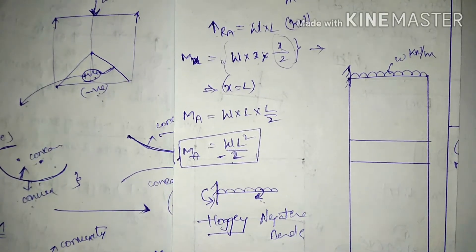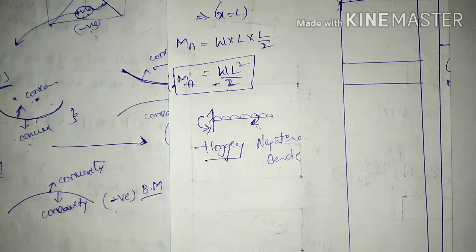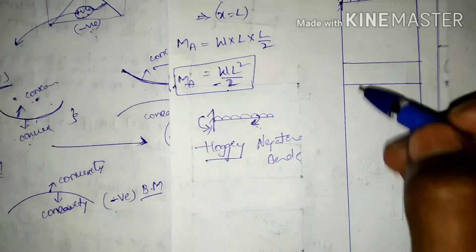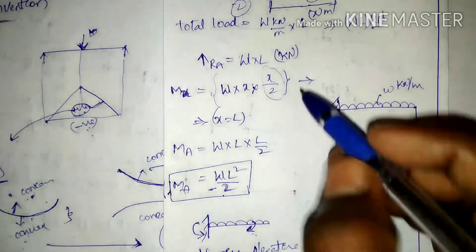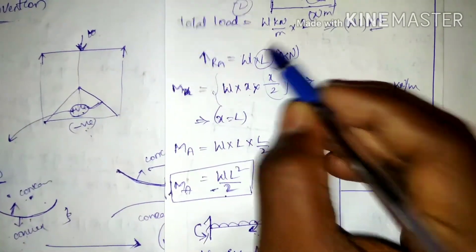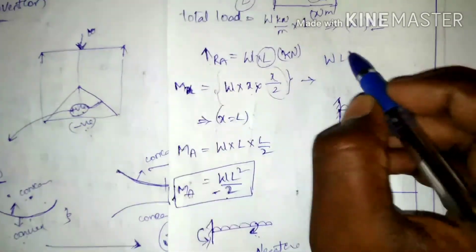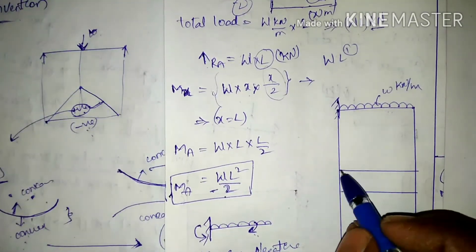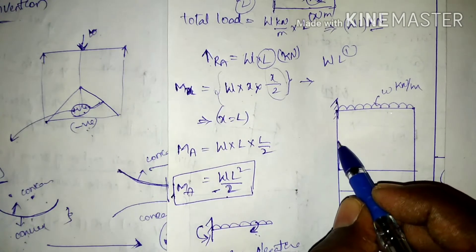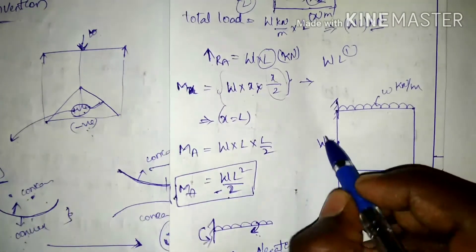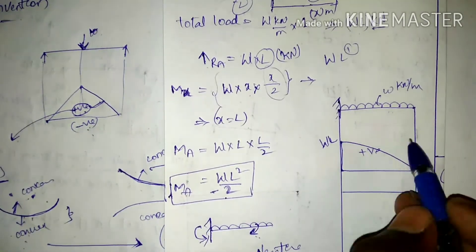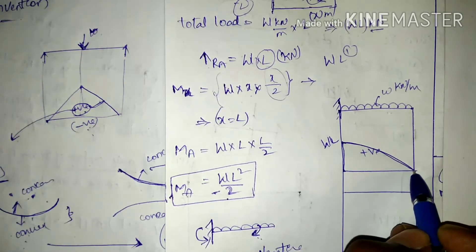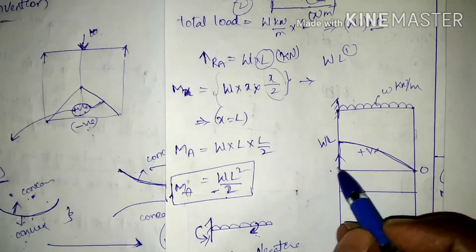To draw the SFD for a cantilever beam with UDL: the equation for shear force is linear (power of L is 1). The SFD starts from zero at the free end and increases linearly to RA equals WL at the fixed end.